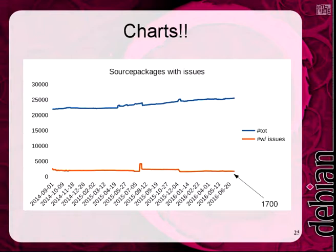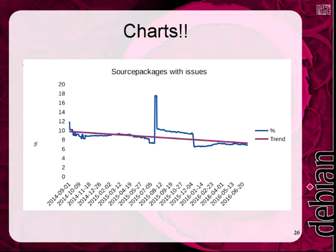Currently we have about 1,700 source packages with issues, which is a quite high number in my opinion. That's currently about 6.5% of all packages which have some issues. The trend line shows that we're actually getting better for whatever reason — either people know about this, or people just fix stuff anyway.